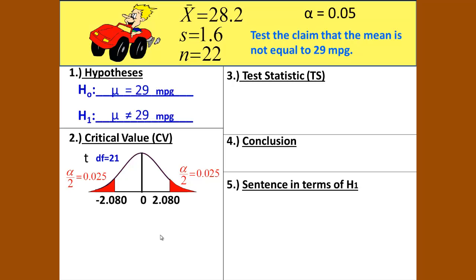That gives us, with the degrees of freedom of 21 and the significance level, a critical value of negative 2.080 and positive 2.080. We are now ready to label our reject and do not reject the null regions, and then to find our test statistic.